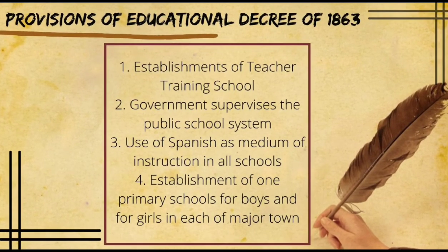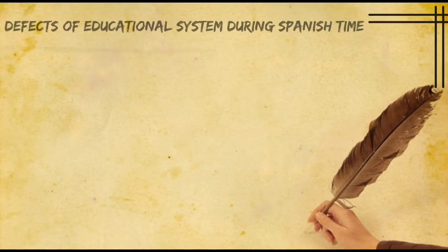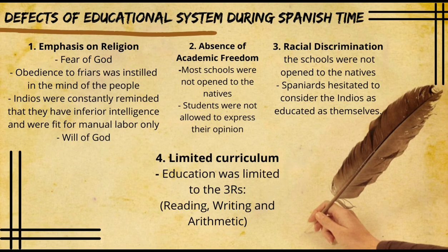The provisions of the Educational Decree of 1863 were: first, establishment of a teacher training school; second, government supervision of the public school system; third, the use of Spanish as the medium of instruction in all schools; and lastly, the establishment of one primary school for boys and one for girls in each major town.